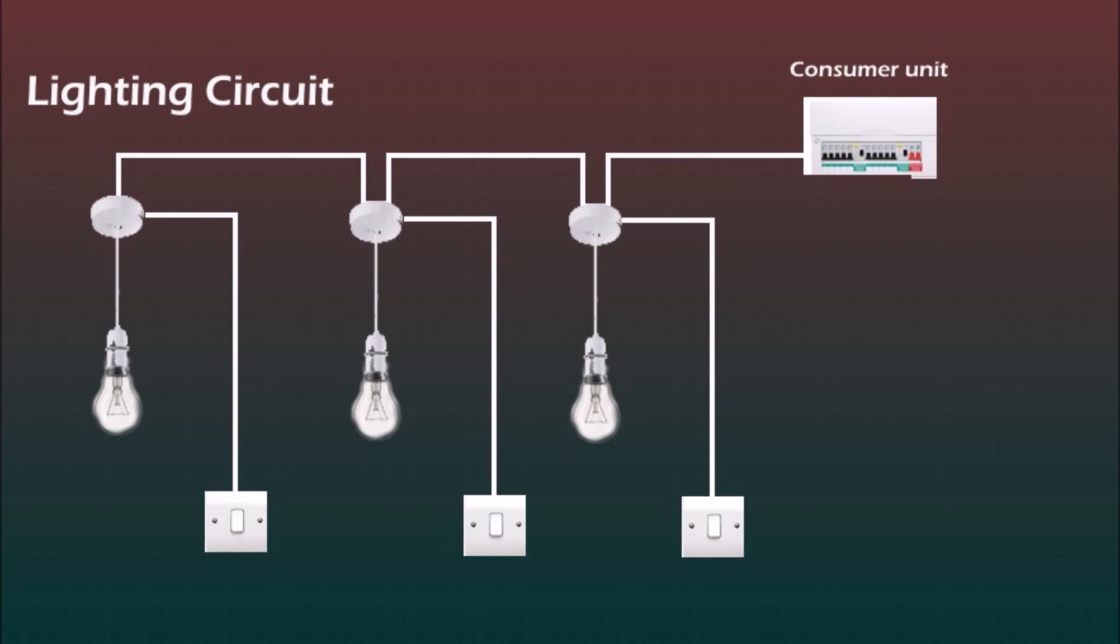But let's say the first lamp is on the staircase and we want to control it from two switches, one from the bottom and one from the top of the stairs. To do this we need to replace the one-way switch with a two-way switch and also add another two-way switch, then link them together with three core and earth cable.